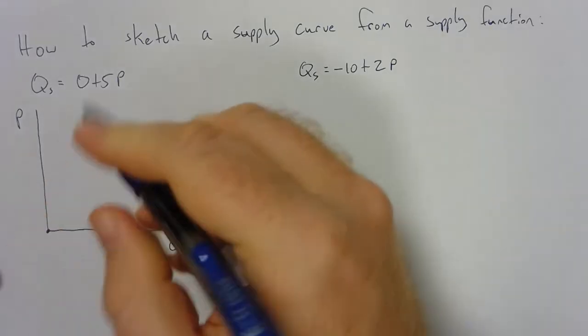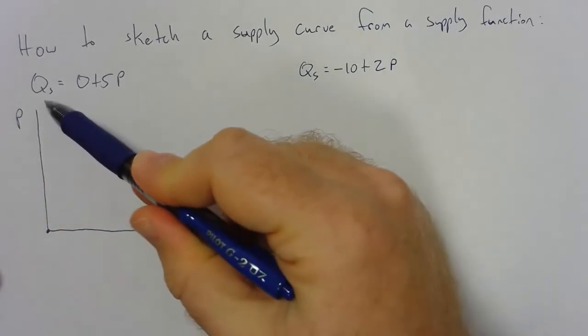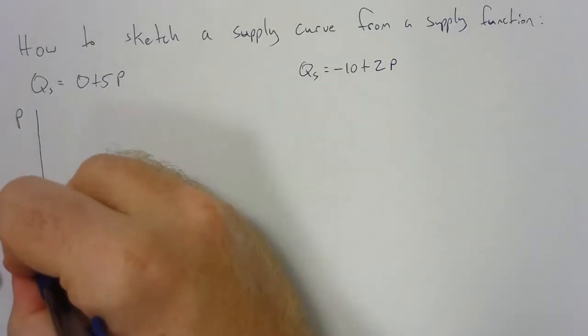For this one, it's going to occur at the origin. So if P equals zero, we know that Q will equal zero. Boom, boom, we're at the origin.